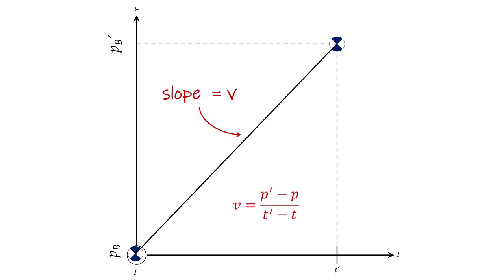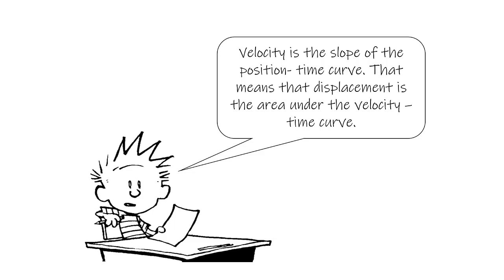Recall that slope is the change in Y divided by the change in X. On the Y-axis we have position, and on the X-axis we have time. So change in position divided by change in time — our equation for velocity — also shows up graphically as the slope of the position-time curve. Velocity is the slope of the position-time curve.